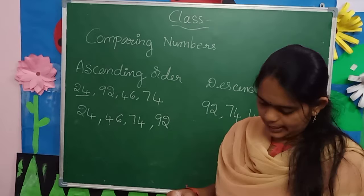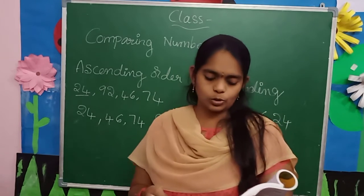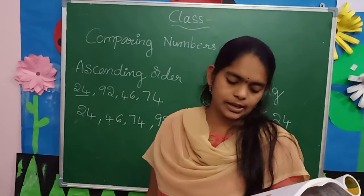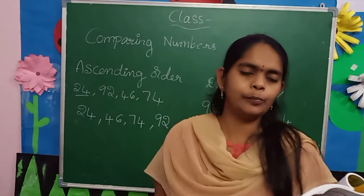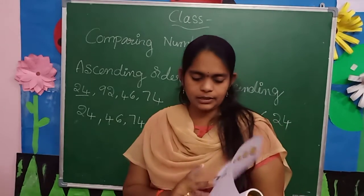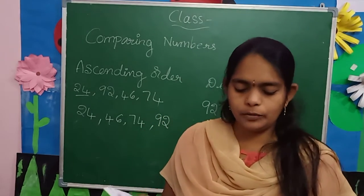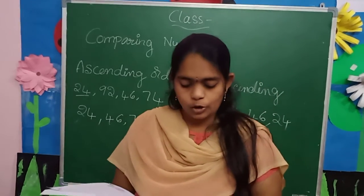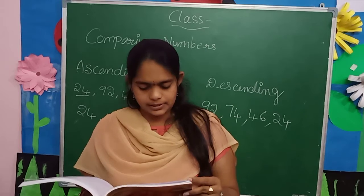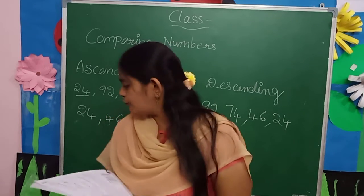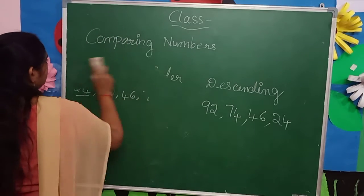Next, let's look at another example. Now we are going to learn forming numbers — smallest number and greatest number. Forming the smallest number and greatest number.